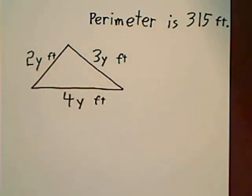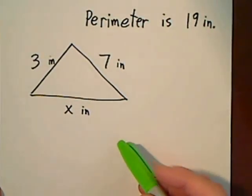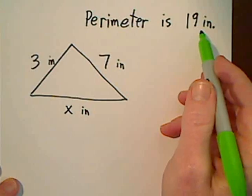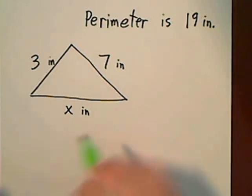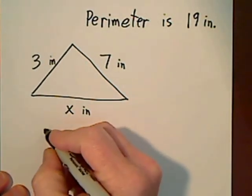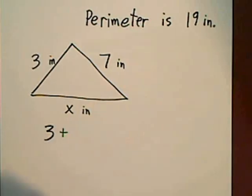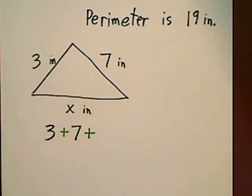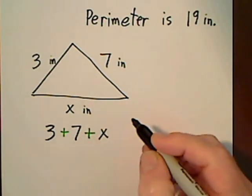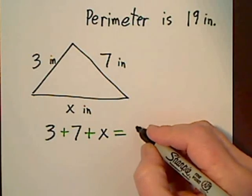We're asked to find the length of each side. Before I go through that, I'd like to show you an example that's maybe a little bit more straightforward. On this one, if they said that the perimeter is 19 inches, that means if you add up the length of each side, you're going to get 19. So we could write an equation for this: 3 plus 7 plus x is supposed to give us 19.